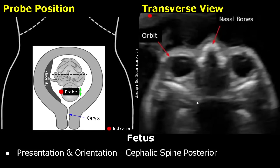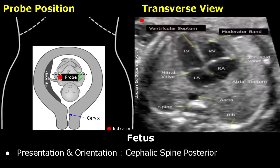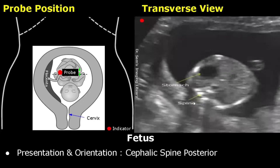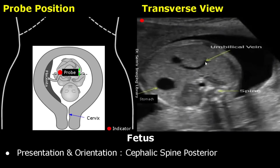Move the probe slightly up towards the mother's umbilicus and you can locate the fetal orbits and nasal bones. Move the probe further upwards and you will find the fetal chest — you will be able to see the fetal heart. The spine is seen at the bottom half of the image. With small movements towards the umbilicus, you will be able to see the stomach on the left side of the fetus. When you locate the umbilical vein along with the stomach, you can measure the abdominal circumference.